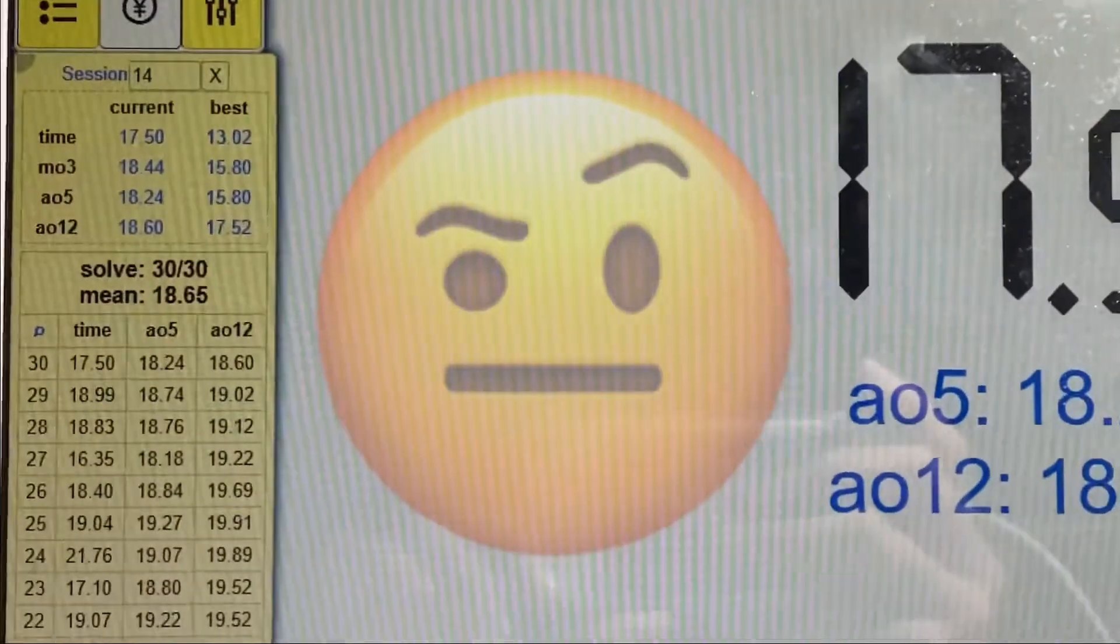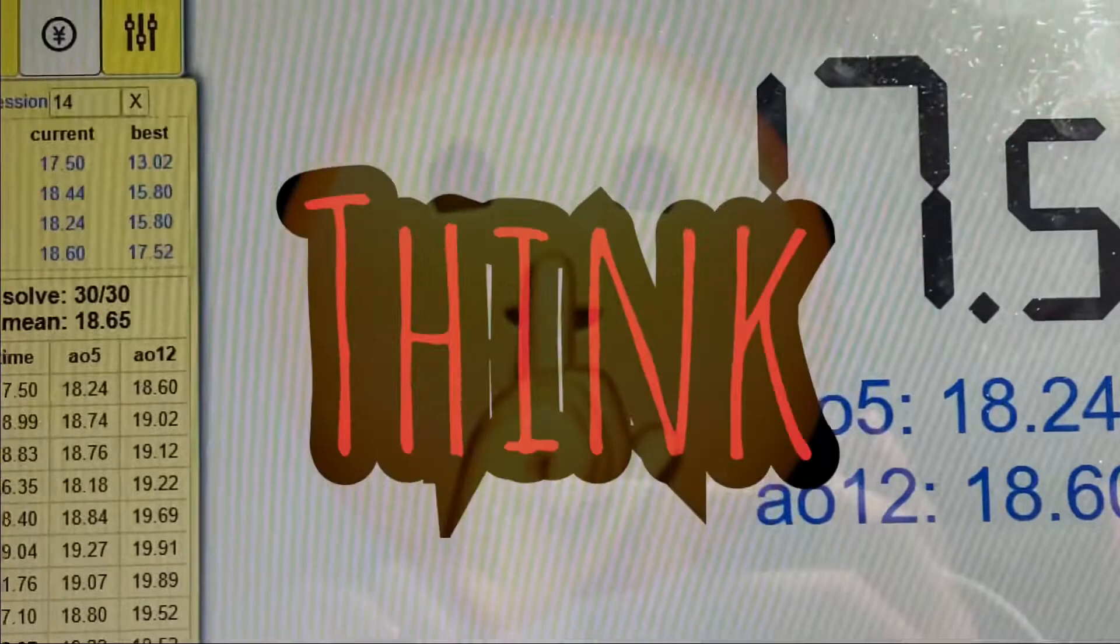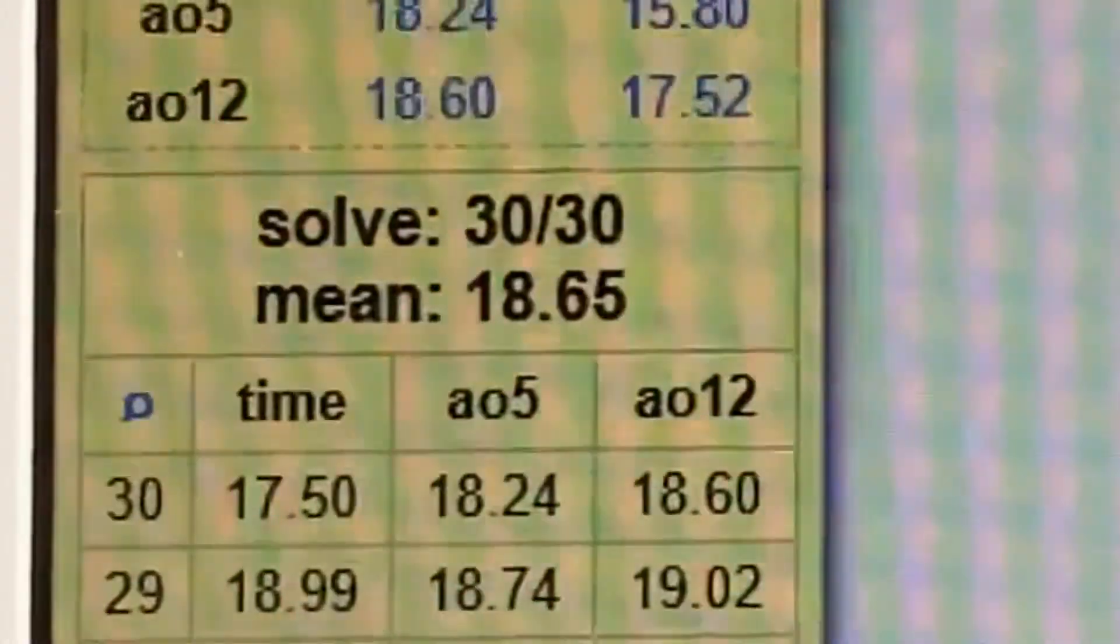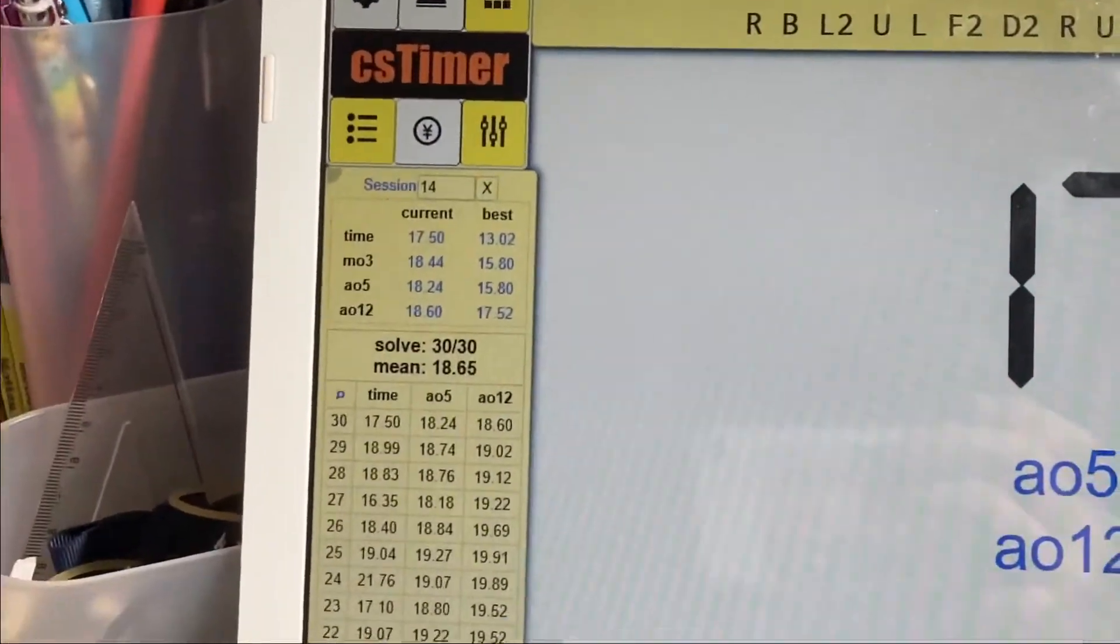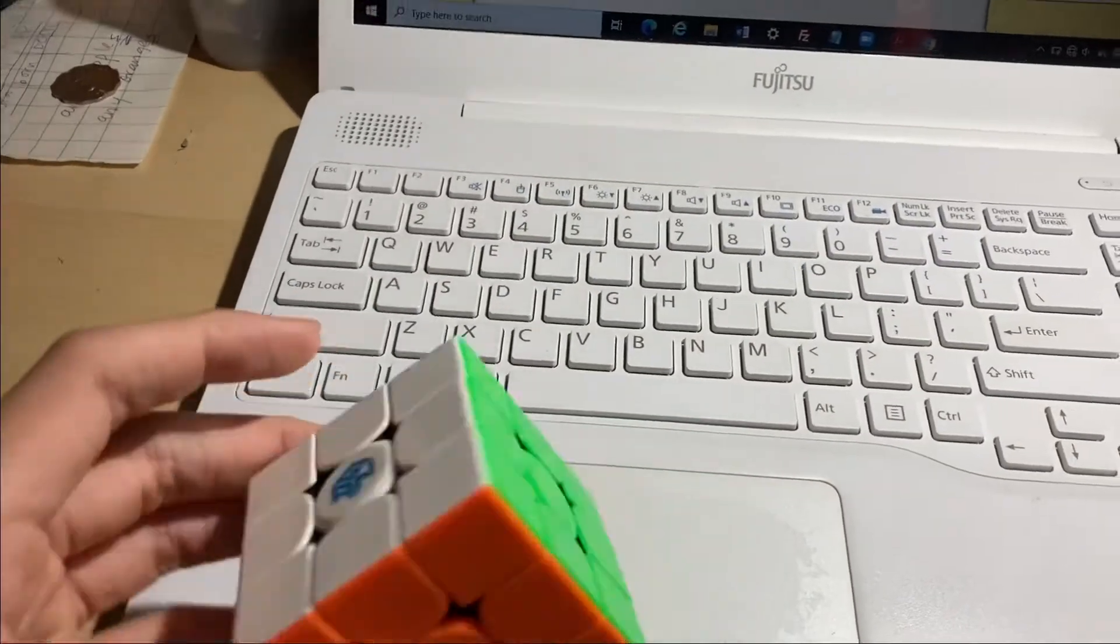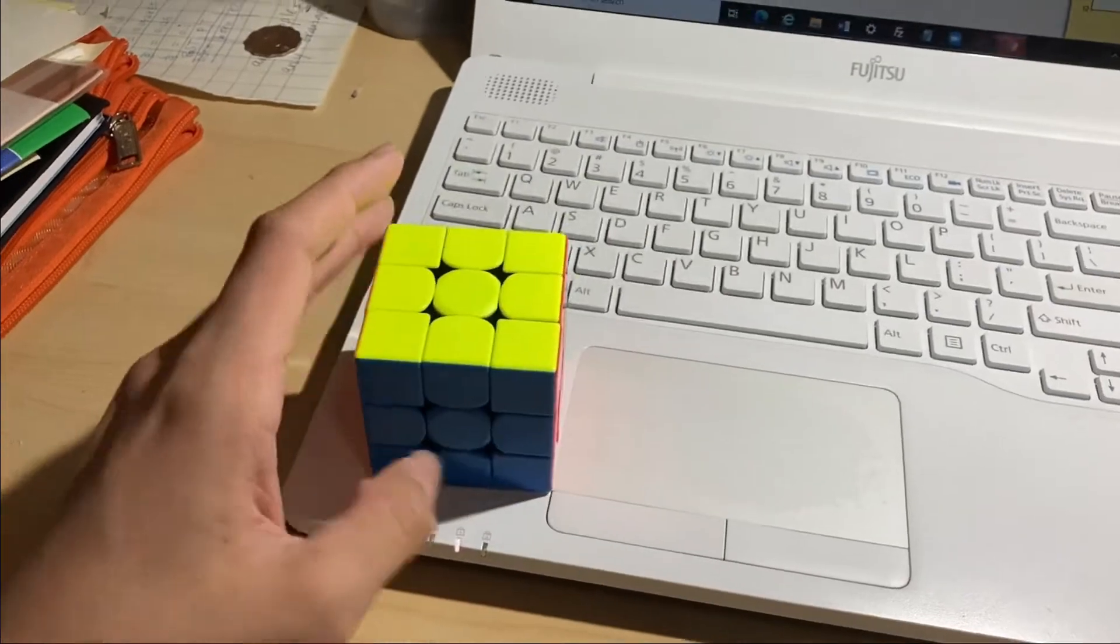I think that's enough, because I don't have much time. The average is 18.65, so let's take out the caps of the cube. I will take out yellow, blue, and red, as it is Jason.